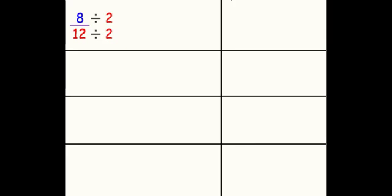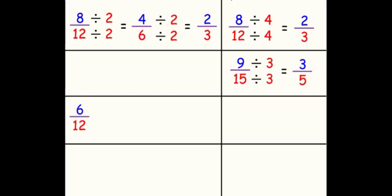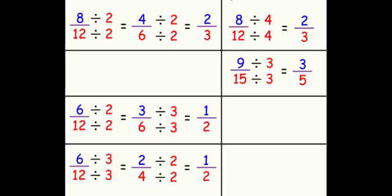So this is the same as the first example — dividing numerator and denominator by 2 and then by 2 again to get 2 thirds, or we could have just divided by 4 to get 2 thirds. For 9 and 15, we divide numerator and denominator by 3 to get 3 fifths. For 6 over 12, we did it three different ways: divide by 2 then by 3 to get 1 half; or divide by 3 then by 2 to still get 1 half; or divide numerator and denominator by 6 directly — 6 divided by 6 is 1, and 12 divided by 6 is 2.